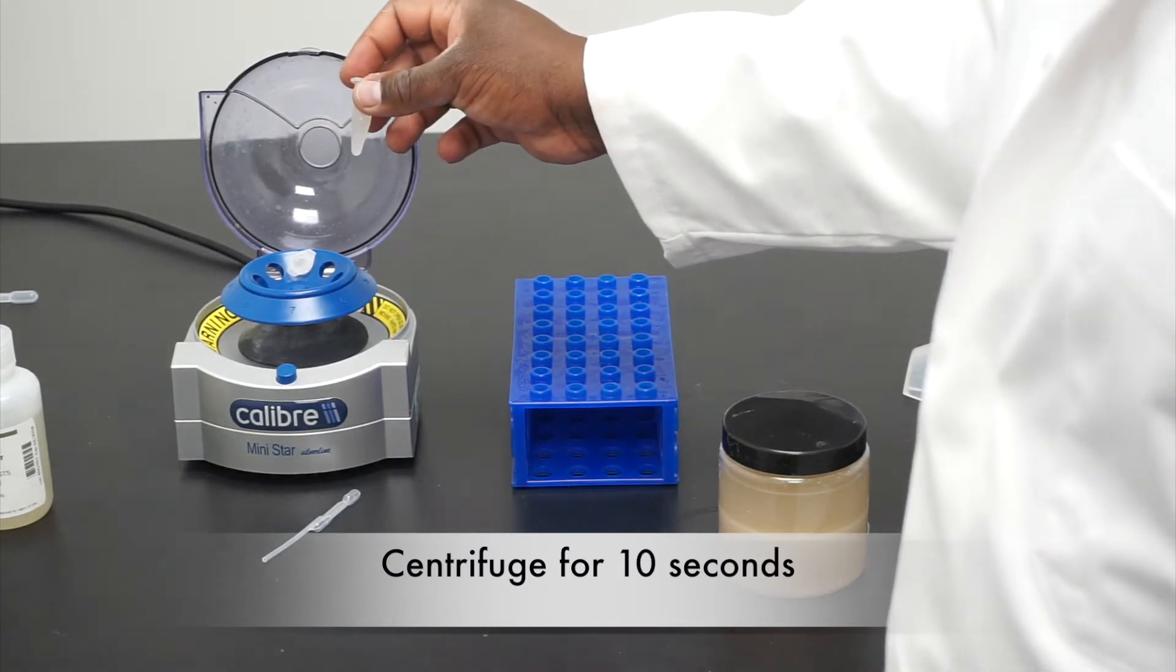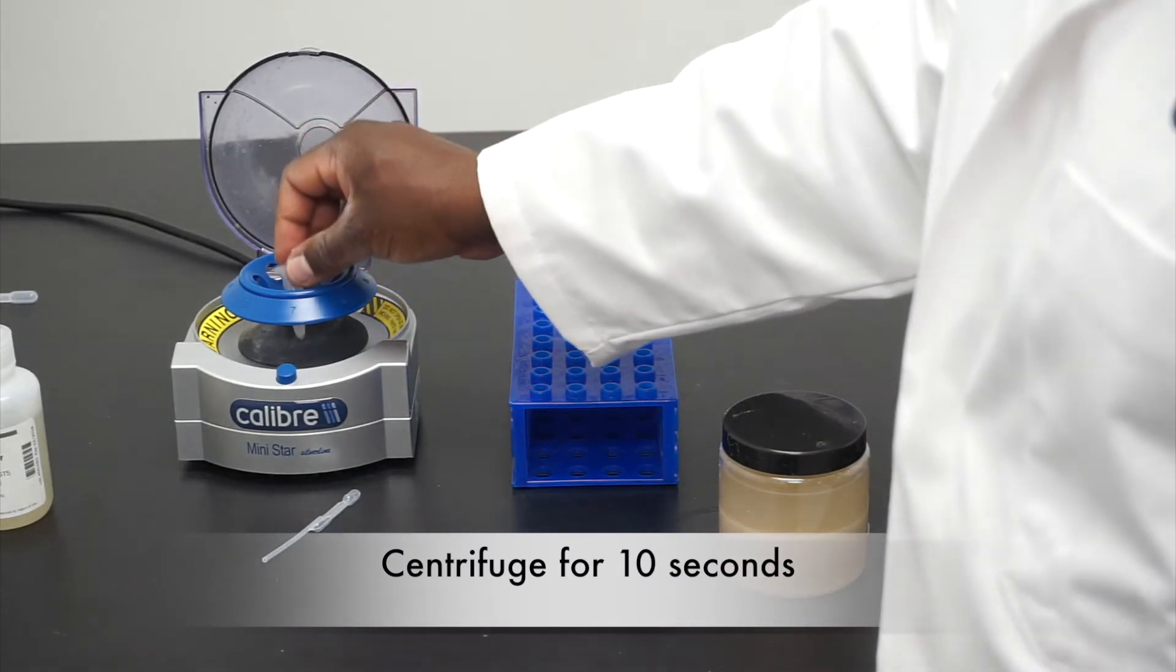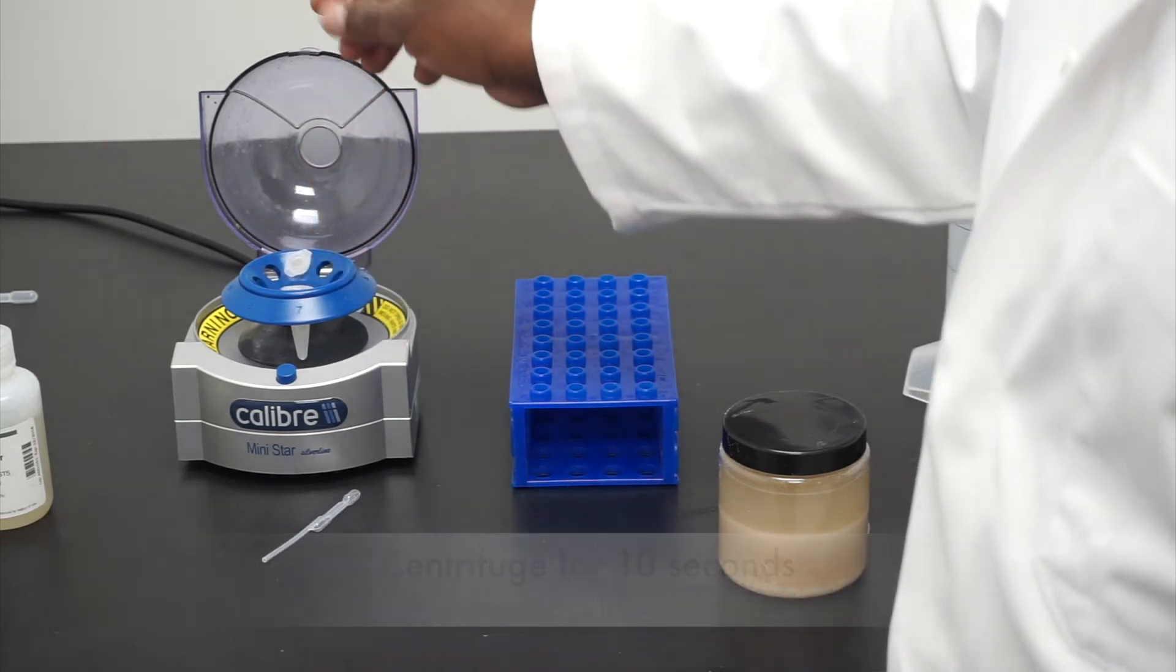Place your microcentrifuge tube into your centrifuge and allow it to spin for 10 seconds.